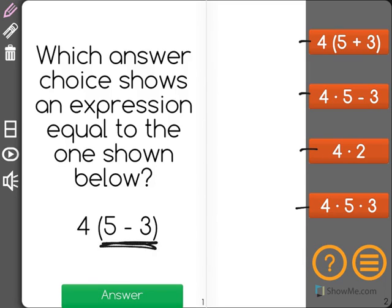And I know I have to simplify it by always starting solving what's in the parentheses. So I have 5 minus 3. 5 minus 3 is 2. So what I have now is 4 times 2.